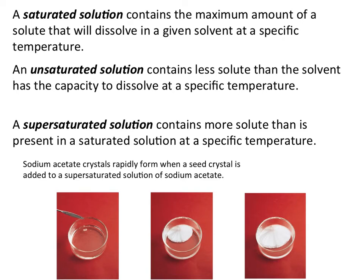An unsaturated solution is basically a solution that has less solute than the solvent can potentially dissolve at a specific temperature. For example, as you're adding salt to a glass of water, if you add a couple of grains of salt, you have an unsaturated solution — that sodium chloride completely dissolves into the water, but the water is still capable of dissolving more. As you continue to add salt, you'll eventually reach a point where no more sodium chloride can be dissolved, and you'll have a saturated solution.